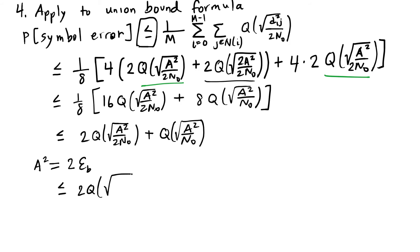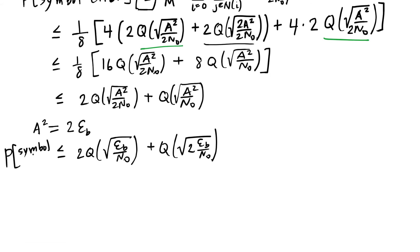So we have our final union bound expression, which says that the probability of symbol error is less than or equal to 2 times this Q function plus this other Q function. And that is now our result for the union bound.